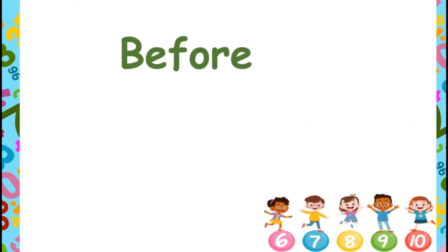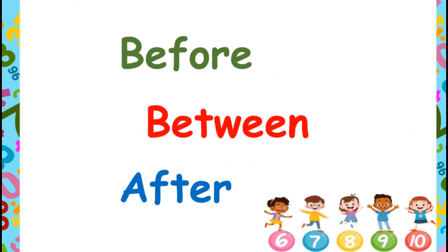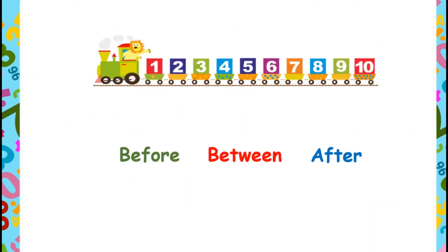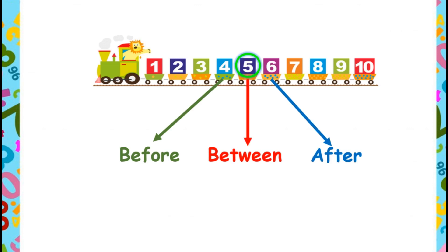Today we will learn about before, after, and between numbers. Firstly, let's understand the concept using the reference of number 5. Before number is the number which comes first, so the before number of 5 is 4. After number is the number which comes next, so the after number of 5 is 6. Between number comes in the middle of two numbers — here 5 is in the middle of 4 and 6, so 5 is the between number of 4 and 6.